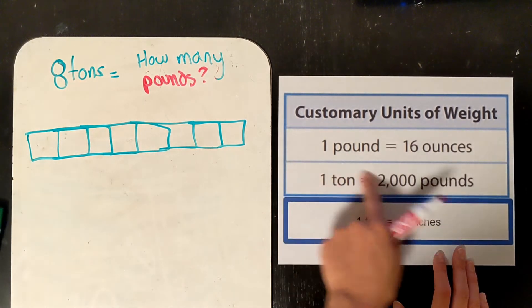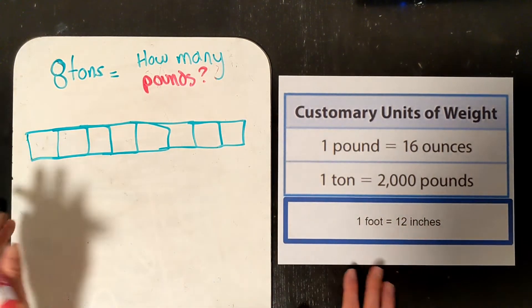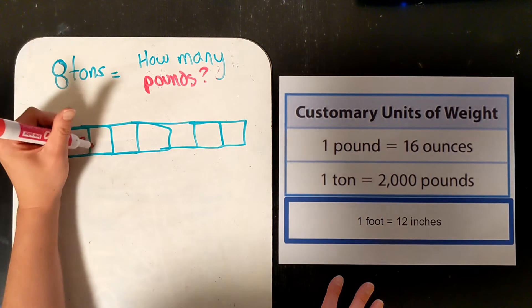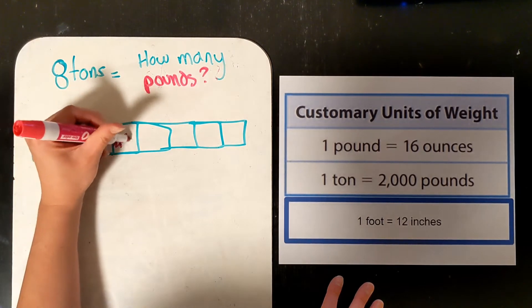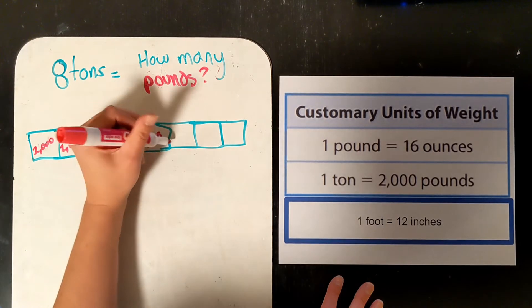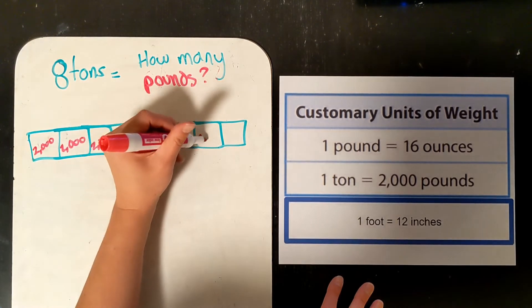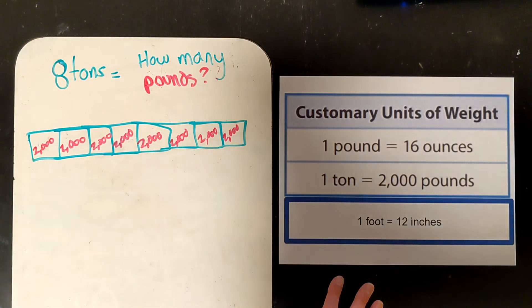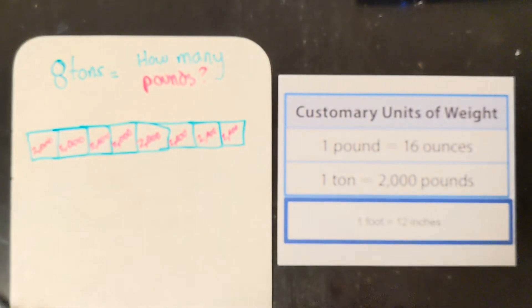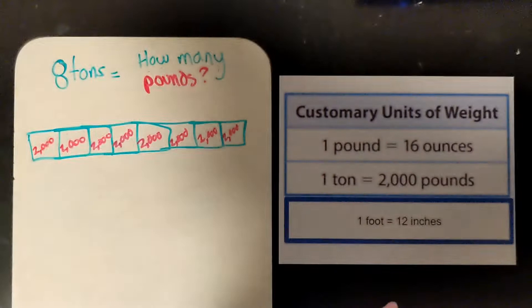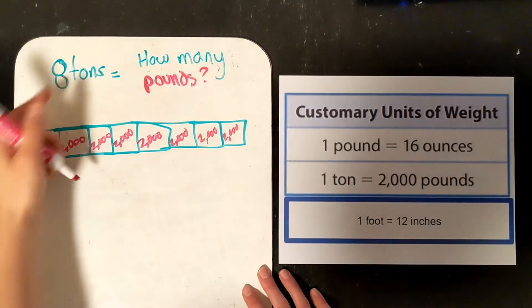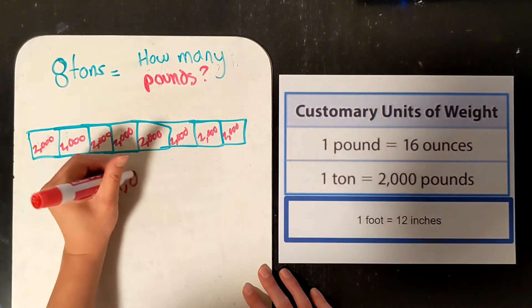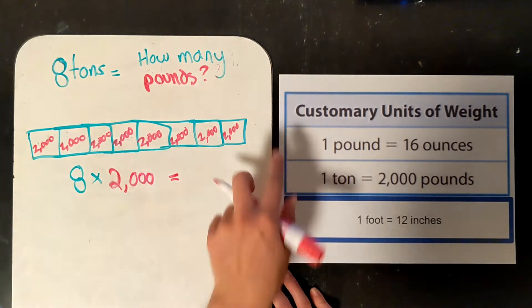So I'm doing 2,000 eight times. So taking a look at my bar model, you should have an idea of what our multiplication problem is going to be. Now I want you to try it. So I'm going to do, and sorry, my screen just got a little fuzzy there.